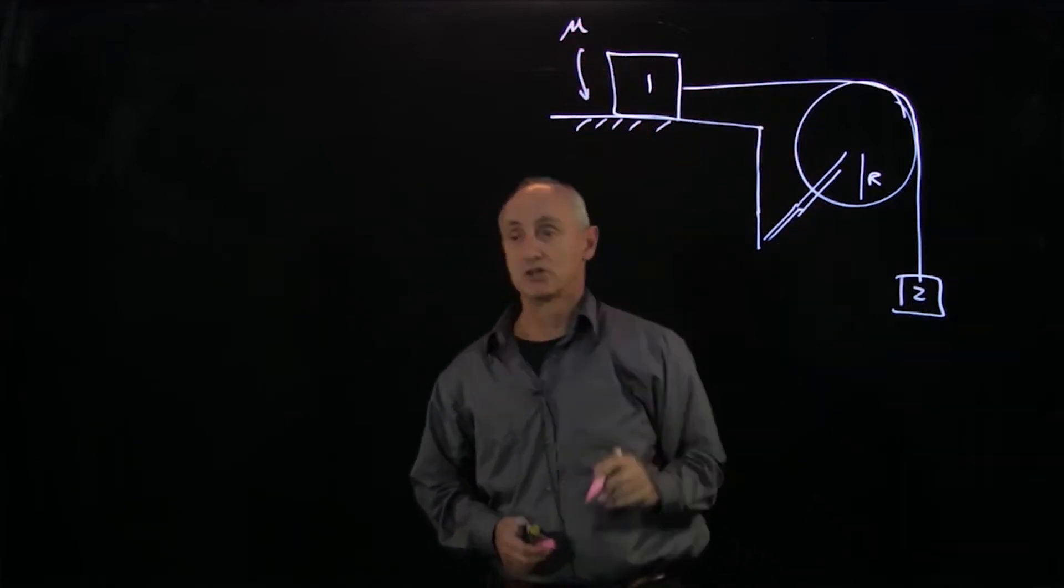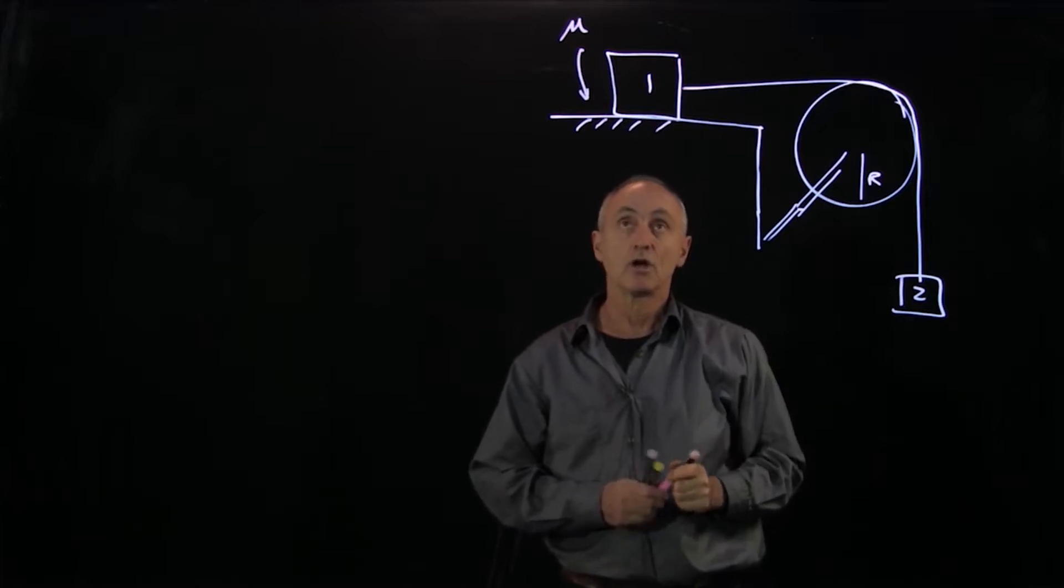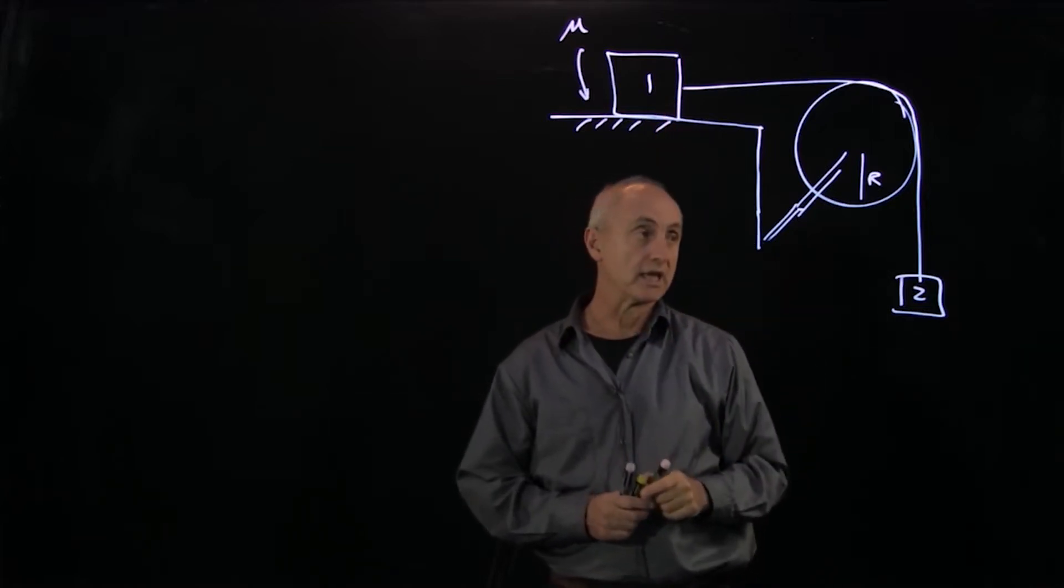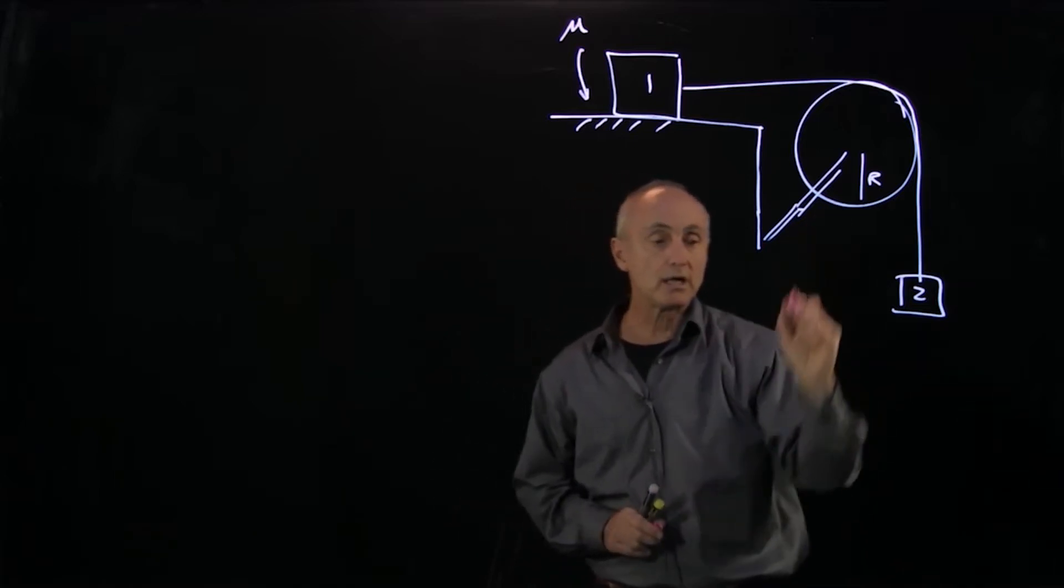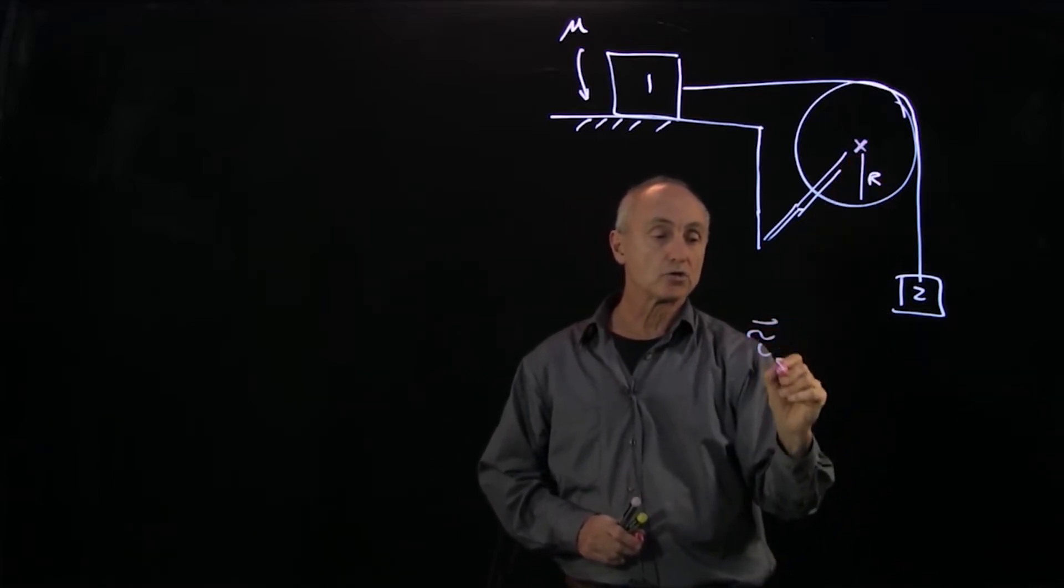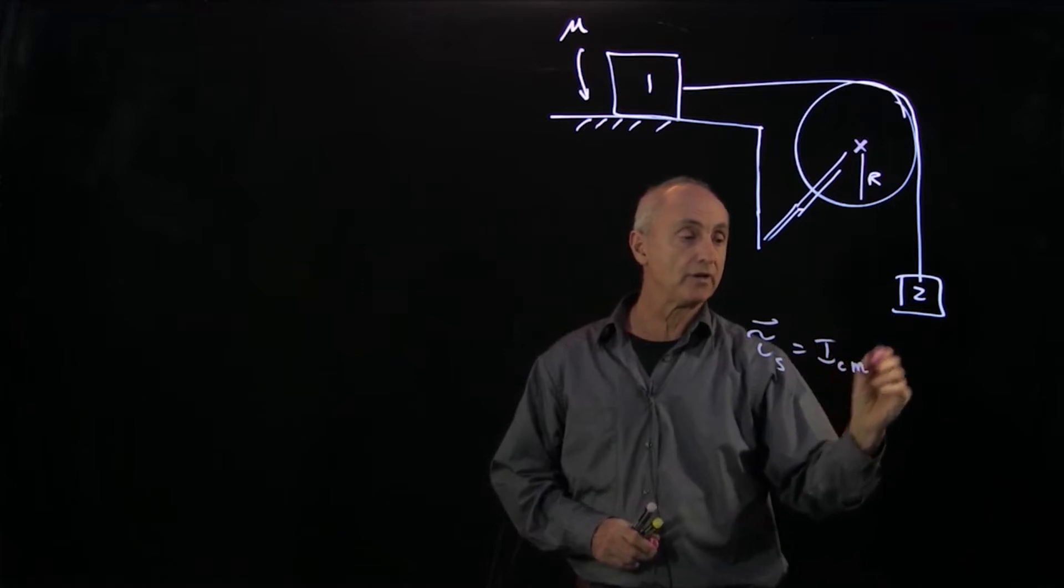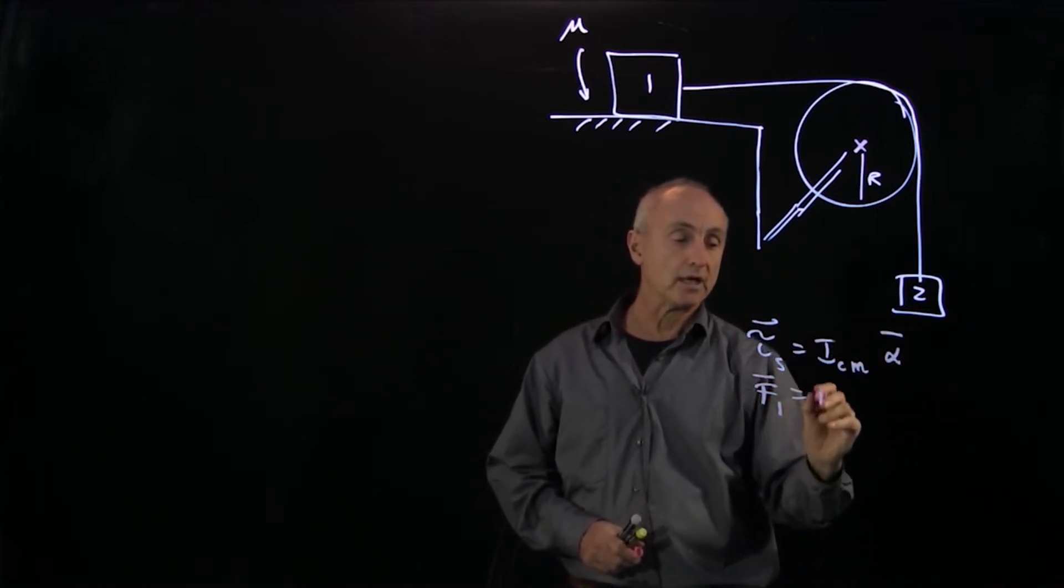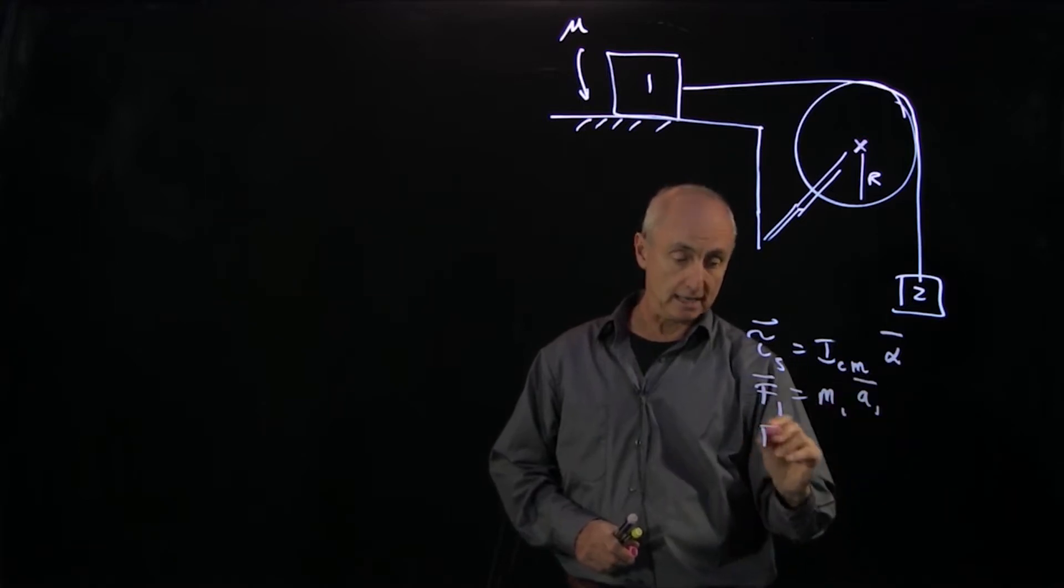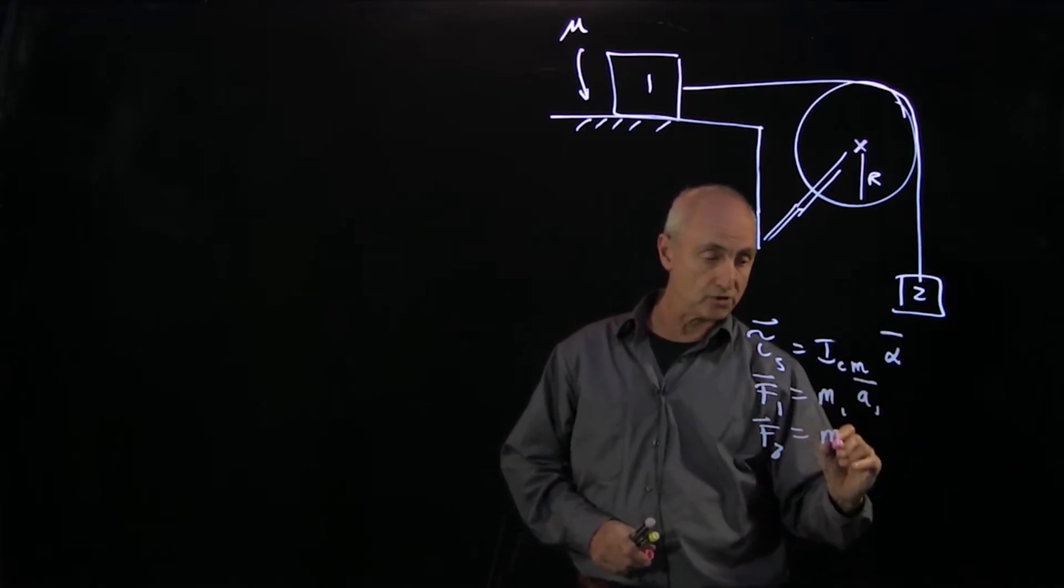There's a coefficient of friction between block 1 and the surface. In order to analyze this problem, I'm going to apply for the pulley our torque equals ICM alpha, and for each of the blocks I'll apply F1 equals M1 A1 and F2 equals M2 A2.